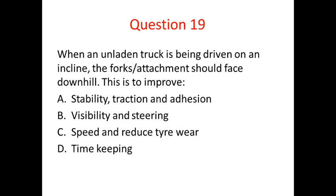When an unladen truck is being driven on an incline, the forks or attachment should face downhill. This is to improve what? The orientation of the vehicle on a hill is important for the stability of the vehicle. The centre of gravity of an unladen truck is near the back of the vehicle, so you want the back facing uphill. When carrying a load, that means the load faces uphill. Therefore the forks face downhill, irrespective of the direction of travel — whether going up or down, you want the forks facing downhill regardless.